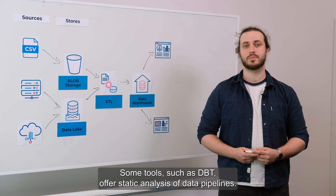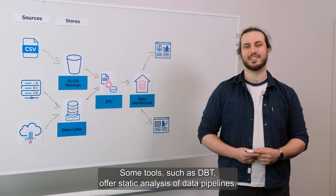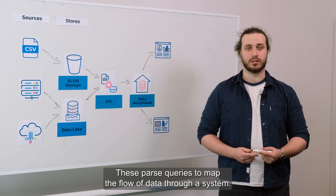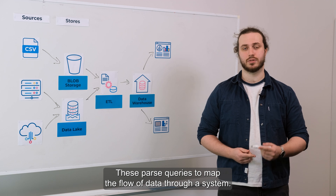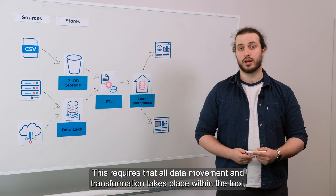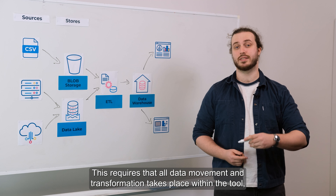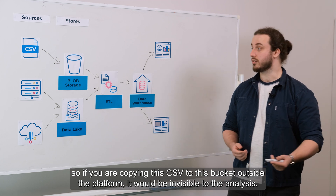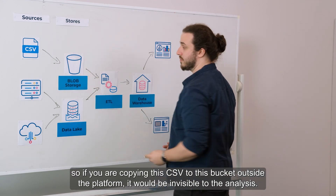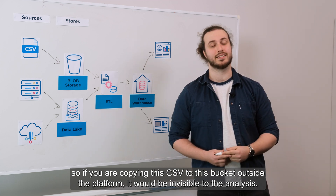Some tools such as dbt offer static analysis of data pipelines. These parse queries to map the flow of data through a system. This requires that all data movement and transformation takes place within the tool, so if you were copying a CSV to a bucket outside the platform, it would be invisible to the analysis.